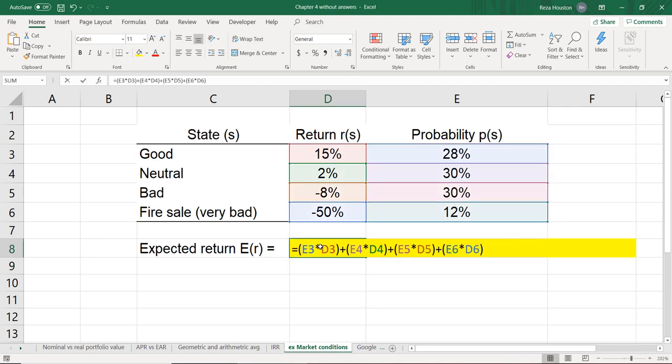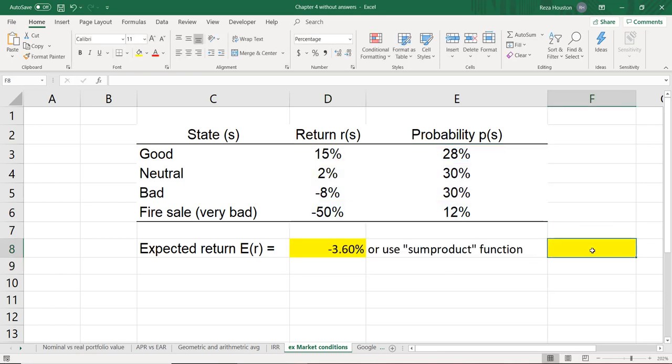So that took a while. Here we only had four states of the economy, but it could be the case that we have more states of the potential economy. So there's actually a way to speed this up, and it's the sum product function.